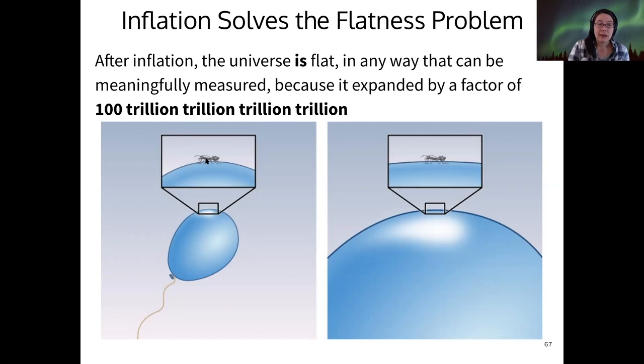The analogy is that if at the beginning of inflation, your ant is sitting on a curved balloon, at the end of inflation, the universe is so much bigger that the curvature cannot be seen. That's how inflation solves the flatness problem.